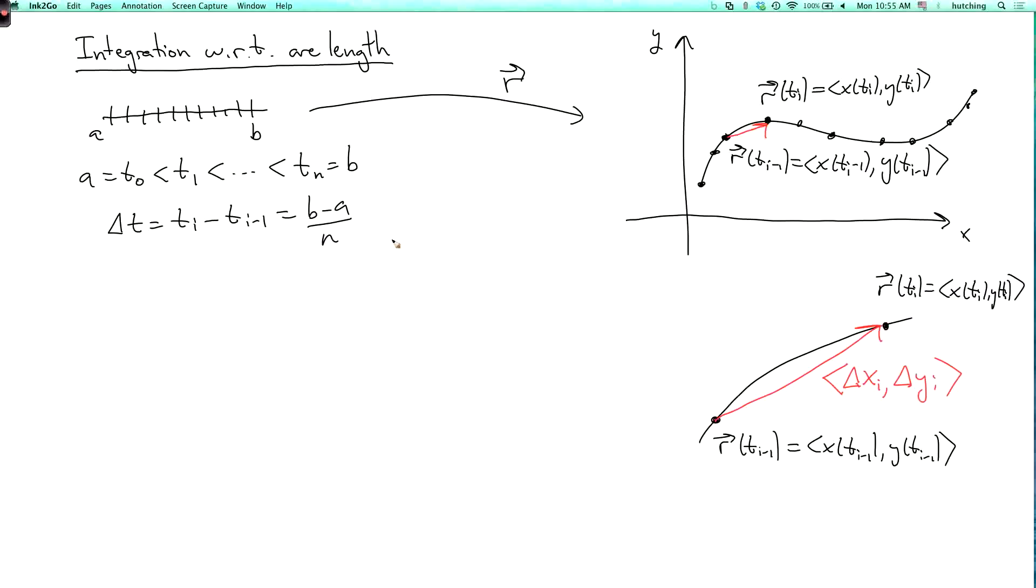So that's the displacement of this little piece of the curve. And then we're going to define delta s to be the length of this vector. So it's going to be the square root of delta xi squared plus delta yi squared.